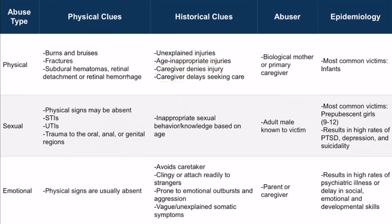When it comes to physical abuse, the abuser is most often the biological mother or the primary caregiver, and the victims are most often infants — children less than one year old.